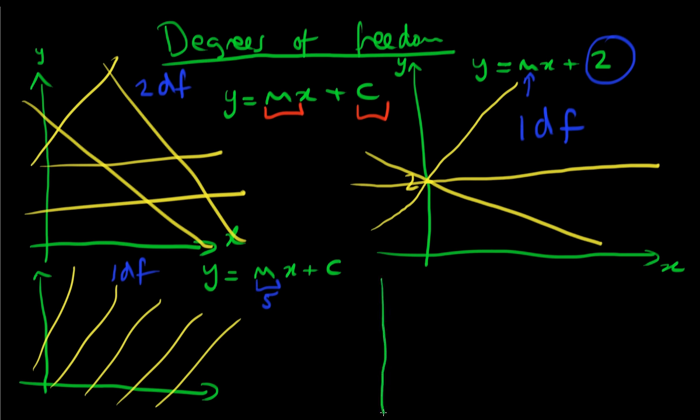And notice finally that if I actually constrain my gradient to be equal to 5 and my y-intercept to be equal to 2, well in fact I can only draw one line which satisfies those two constraints. It's a straight line which goes through the point y equals 2 and slopes upwards. So in this last example we don't actually have any degrees of freedom. In fact, we have zero degrees of freedom.